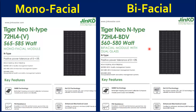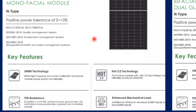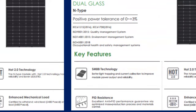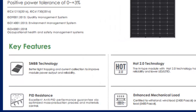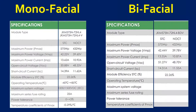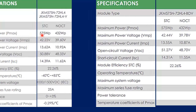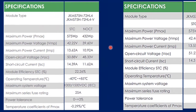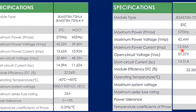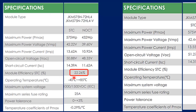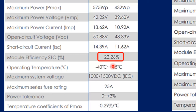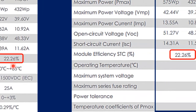Let's see the datasheet of Ginkgo monofacial and Ginkgo bifacial solar panels side by side to extract the exact difference. The key features of both panel types, including technology and percentage degradation, are exactly the same. The maximum power rating of both panels is 575 Watt, and maximum power voltage and current are also exactly the same. The module efficiency of both monofacial and bifacial is 22.26%.